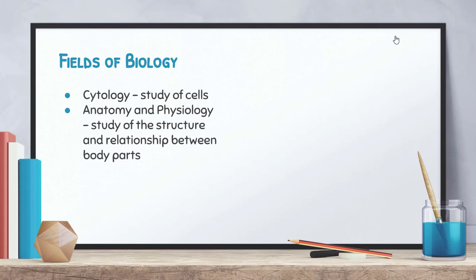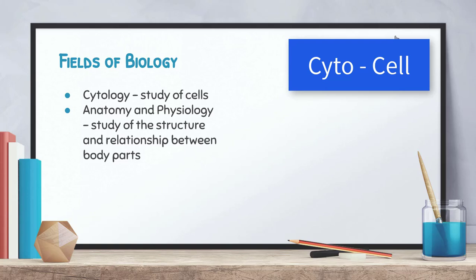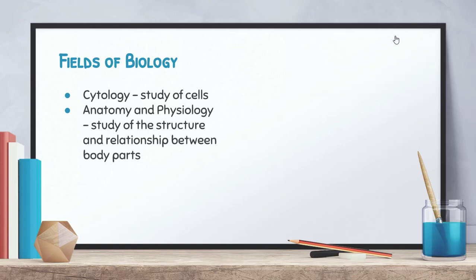A few other fields of study here. We have something that's called cytology. The root cyto refers to cell, so we'll be studying some cytology in this class. Anatomy and physiology—the study of structure is anatomy, and physiology is kind of the relationship between the body parts. How do those body parts work together in order to create a full and functioning organism?